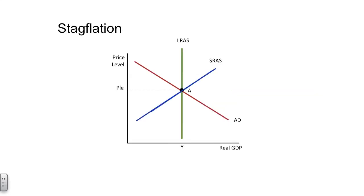A third condition that you might see relative to the long-run aggregate supply and aggregate demand model is a scenario called stagflation. Stagflation combines two words: stagnant and inflation. Effectively, the economy is in a contractionary environment, and additionally, prices are going up. So it's kind of like you lost your job and everything's more expensive. It's a dreaded scenario.